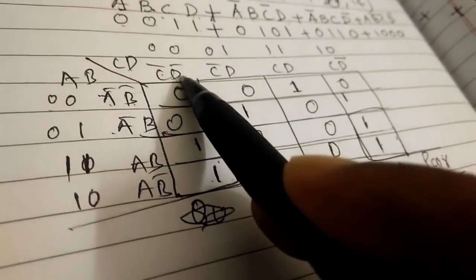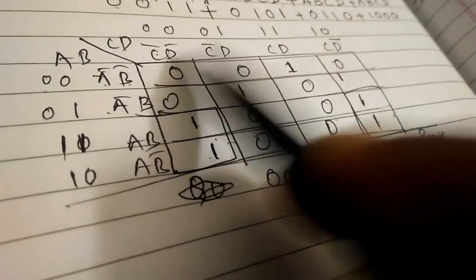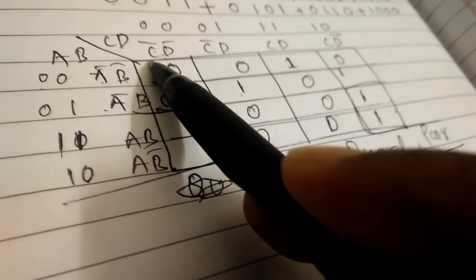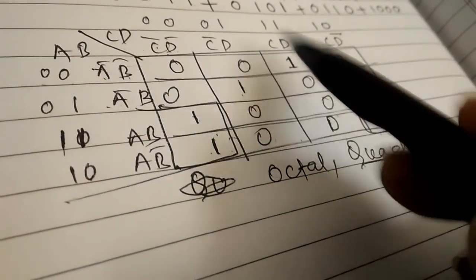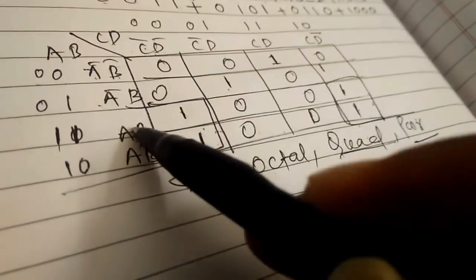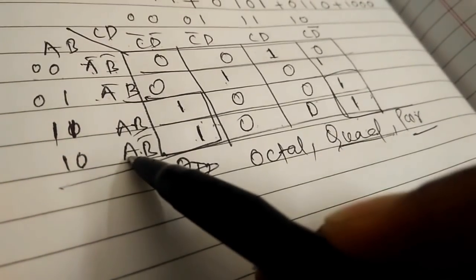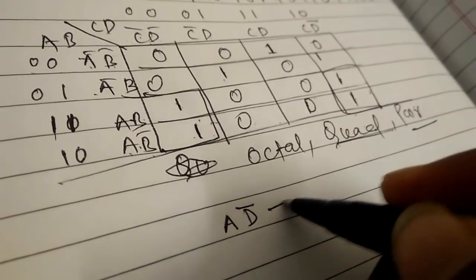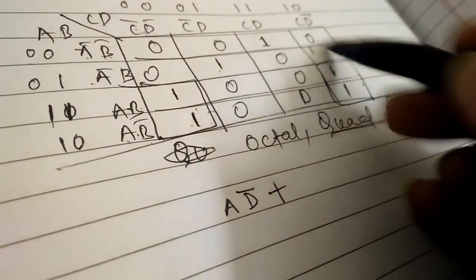Taking a diagonal grouping, you get A with C bar D bar and C bar D. Taking D bar as common gives C bar, and since C bar plus C equals 1, you get D bar. From the vertical grouping, taking A as common gives B plus B bar equals 1, so you get A.